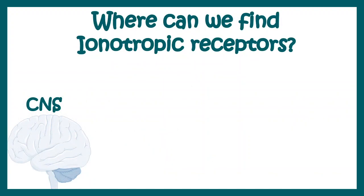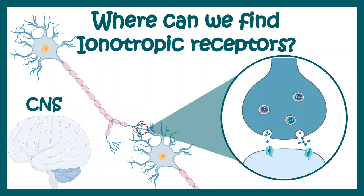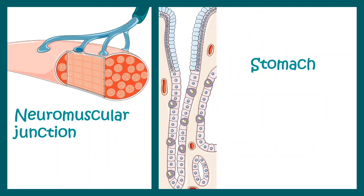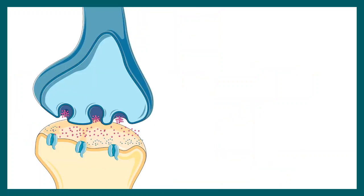The question is where we can find these ionotropic receptors. The simple answer is our central nervous system. In the central nervous system, we can find them in all the glutamatergic synapses — in the post-synapse of glutamatergic synapses. All glutamate receptors are divided into two groups: ionotropic and metabotropic. The ionotropic receptors are pretty common all across the nervous system. Other than that, we can find them in the neuromuscular junction, stomach, and many other locations. In the stomach, we can find them in the parietal cells.